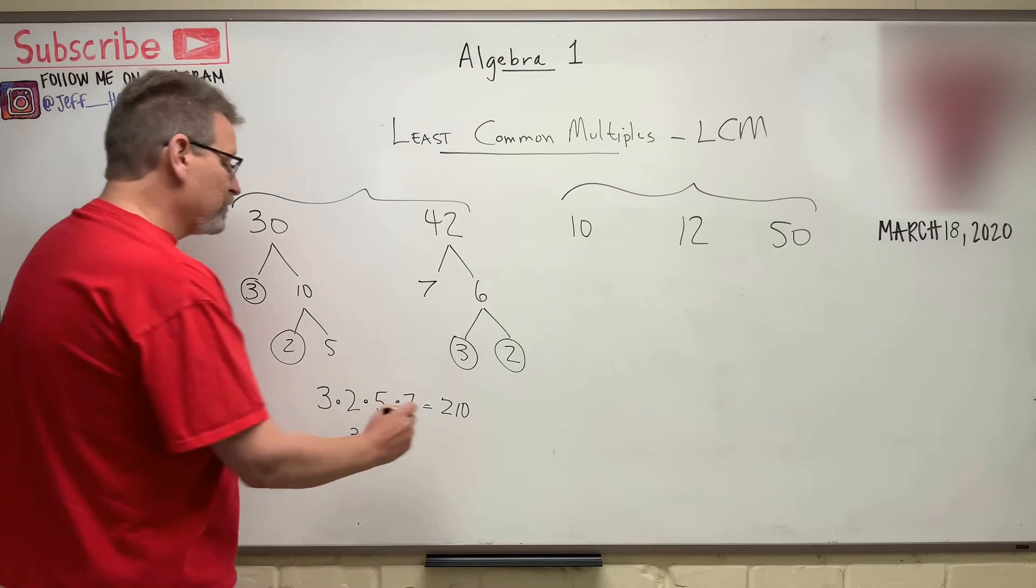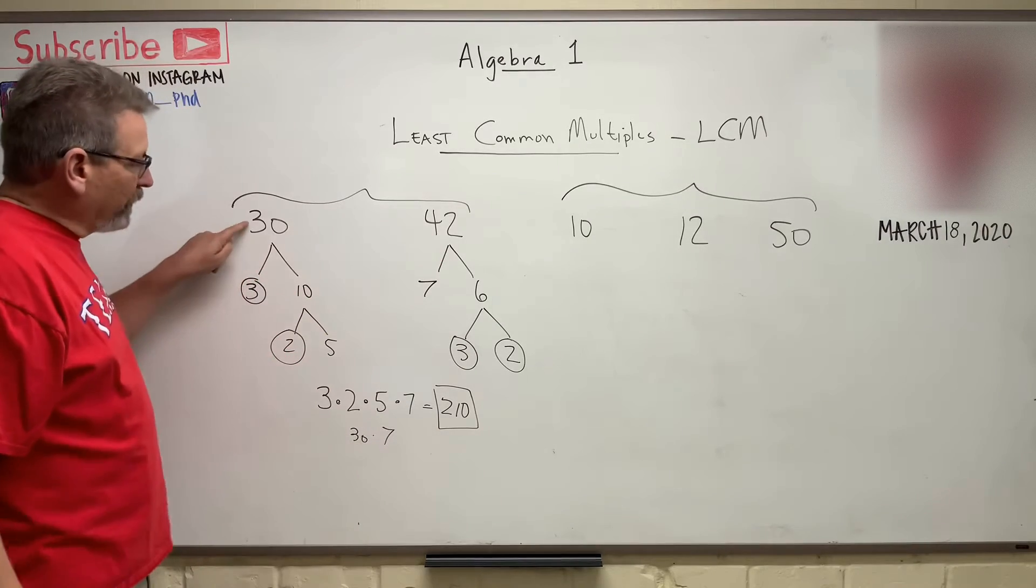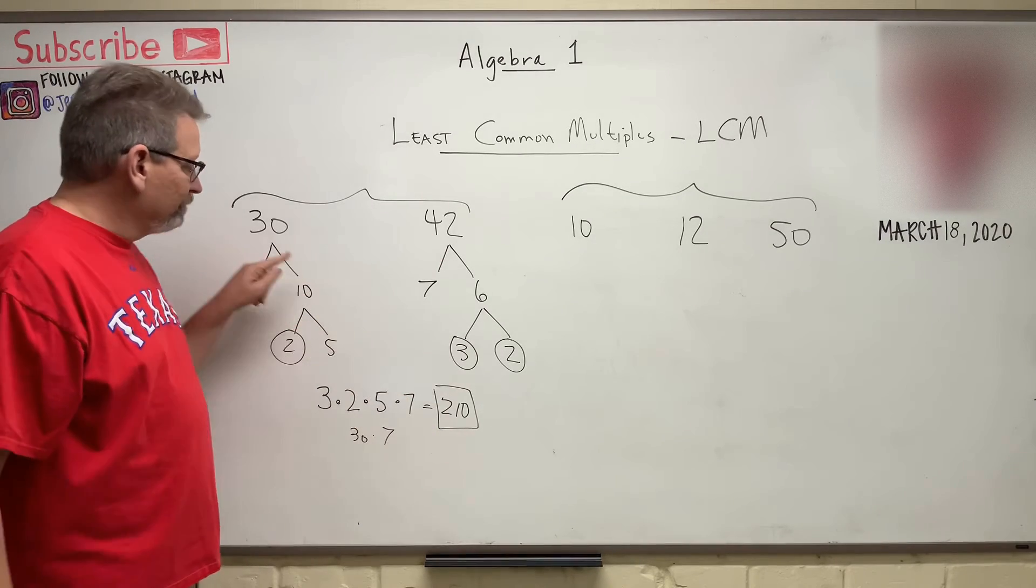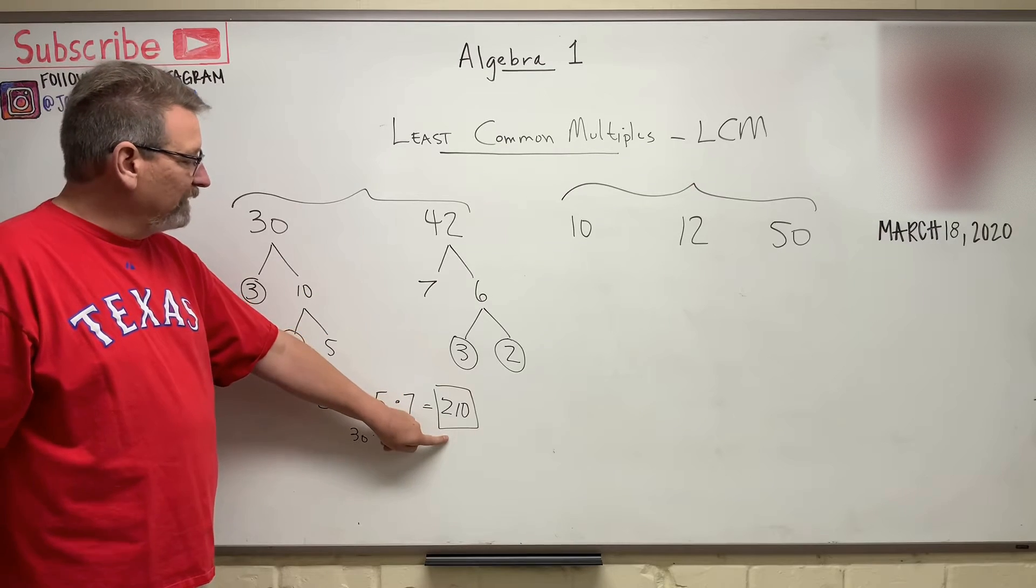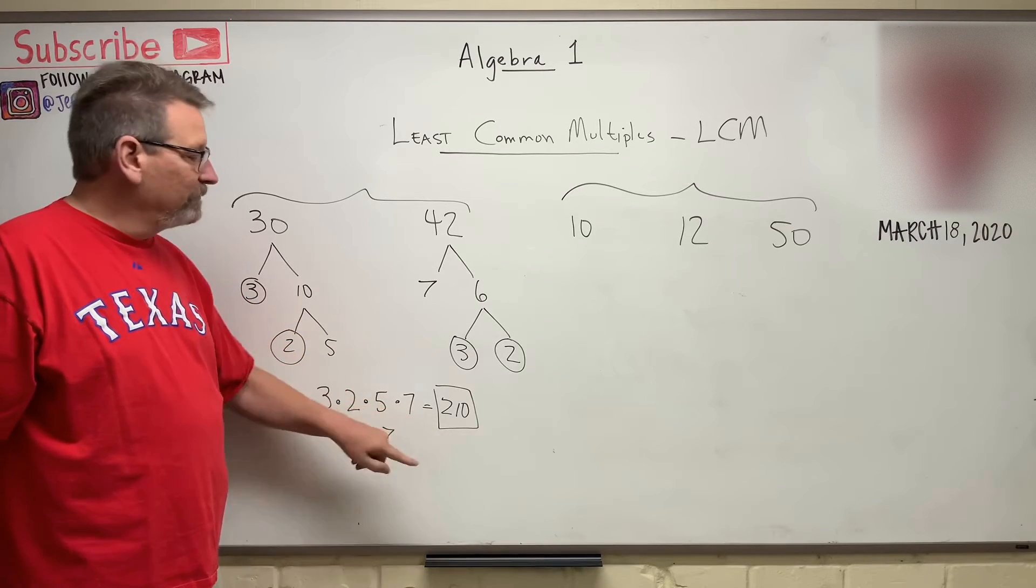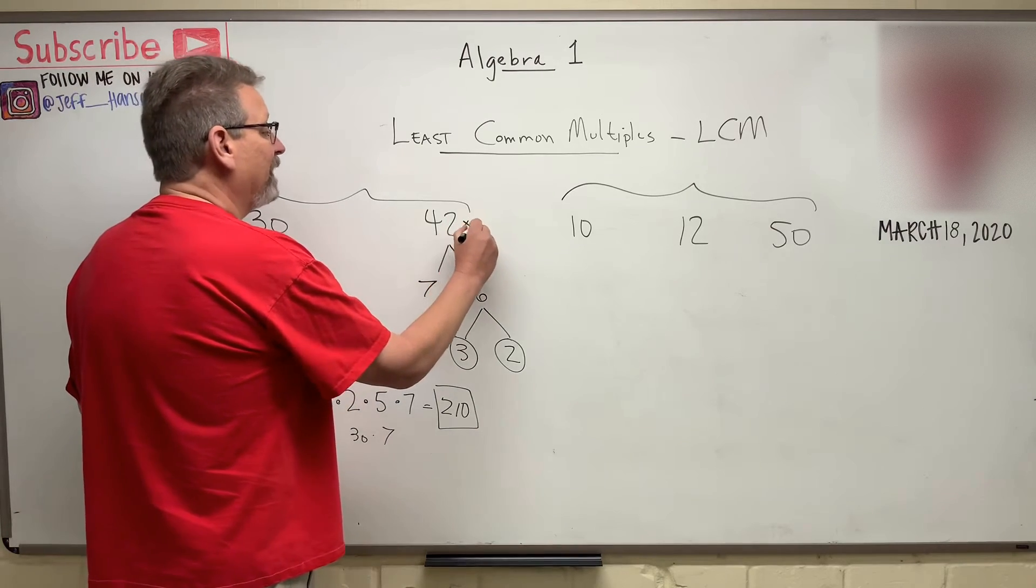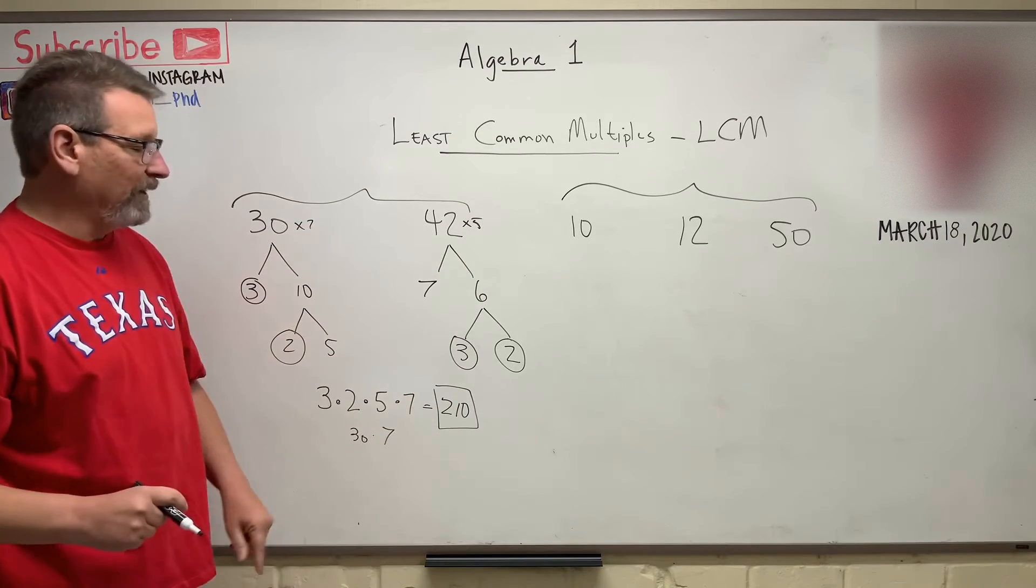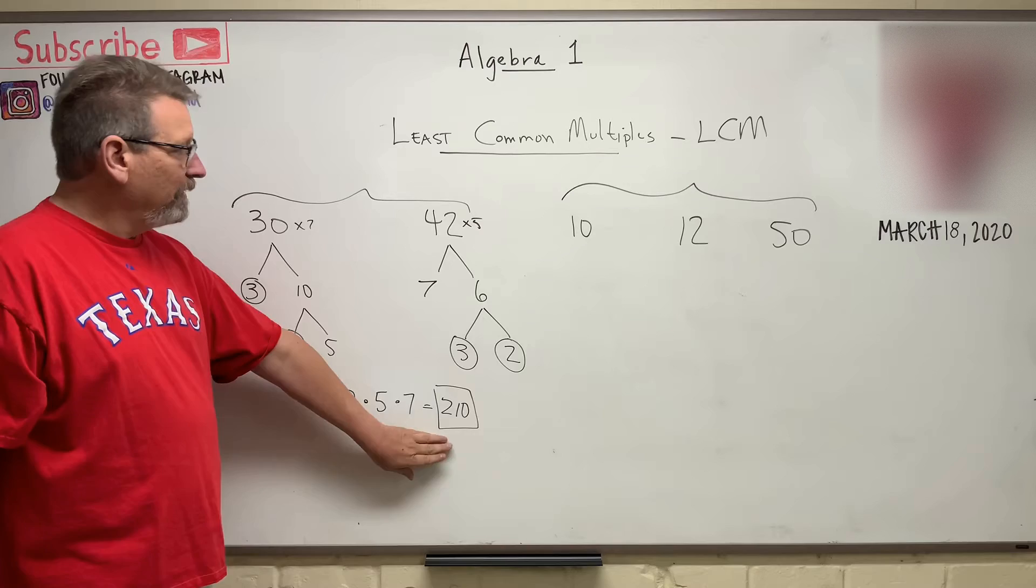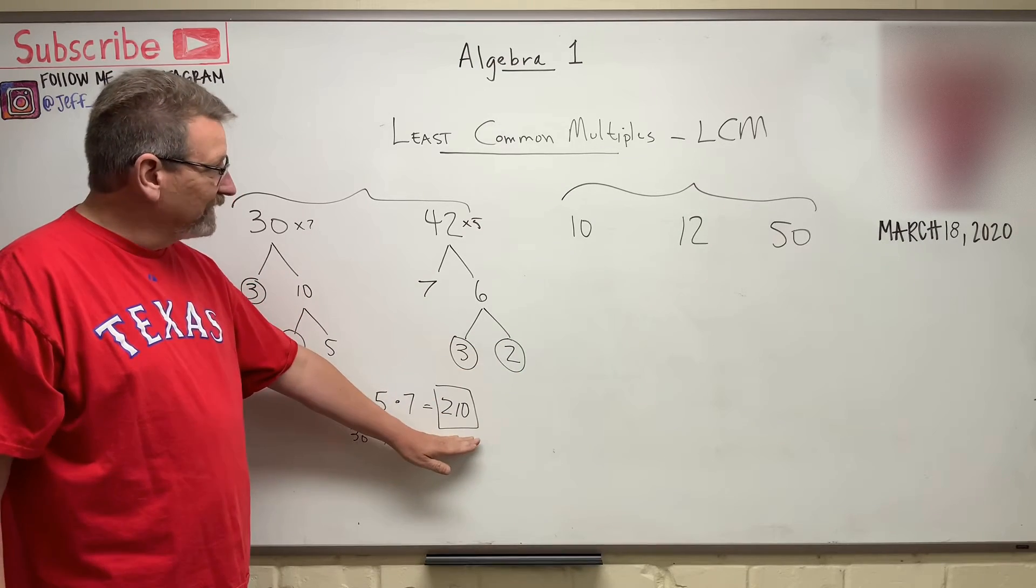So the number 210 is the least common multiple for 30 and 42. 30 goes into 210 about 7 times. 42 goes into 210 5 times. So it is a multiple if you multiply that guy times 5, 210. This guy times 7, 210. So it's a common multiple. And the least means it's the smallest that it can possibly be. So 210 is the least.